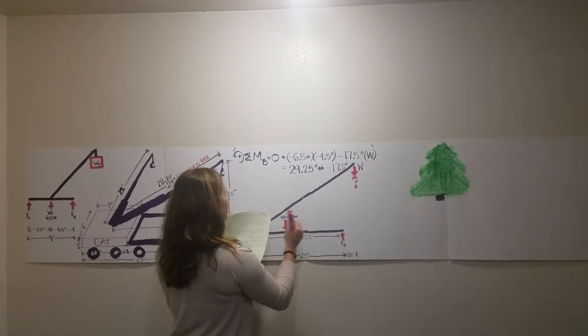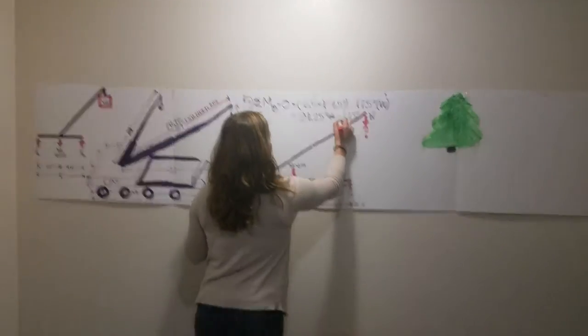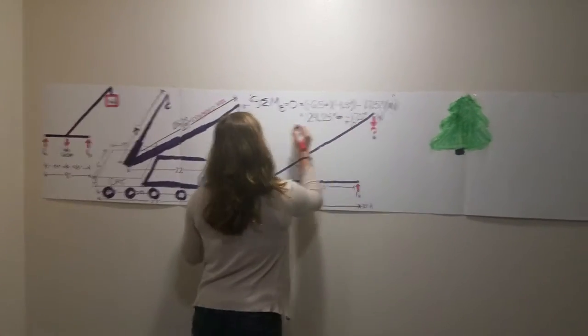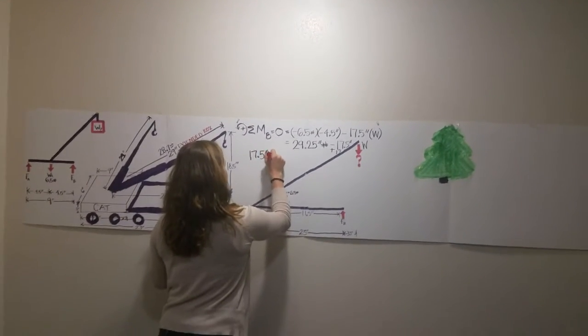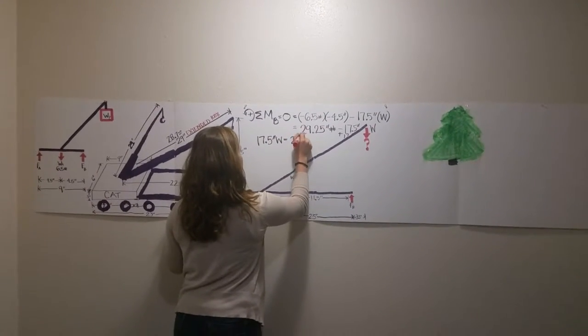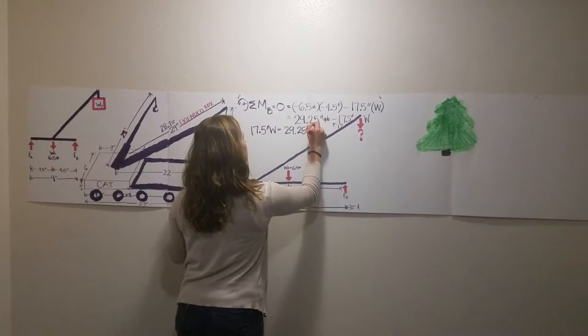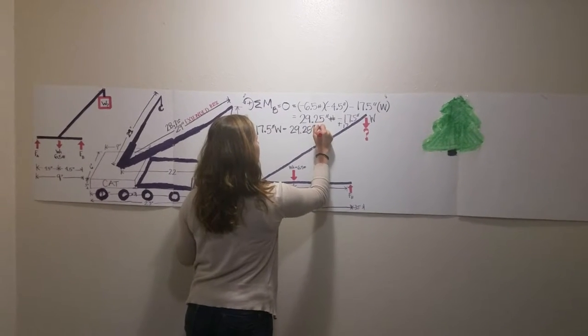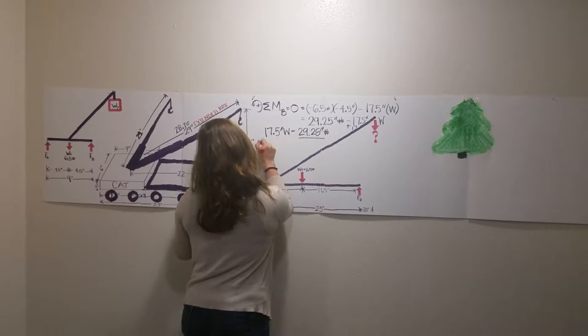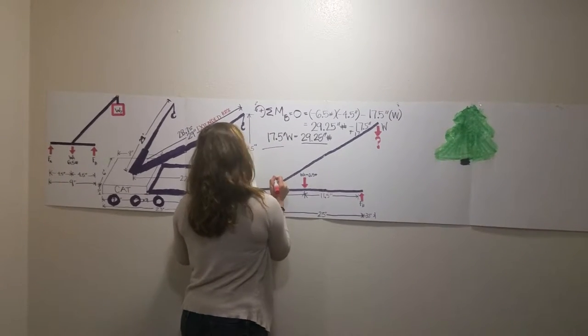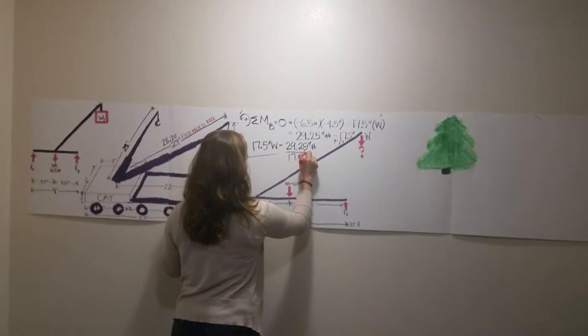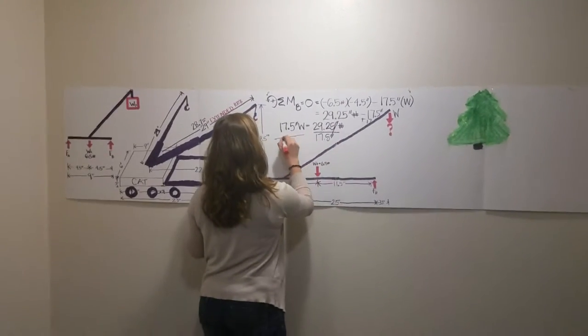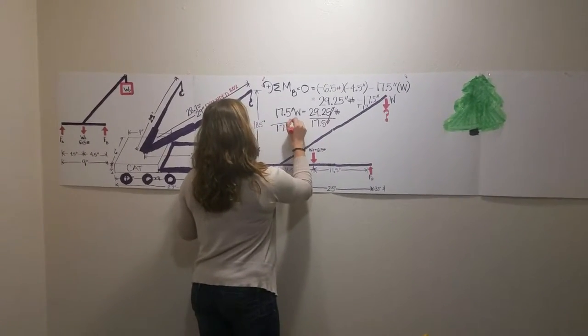And then from there, you can just add this to the other side, so 17.5 inches W equivalent to this, 29.25 inch-pounds. And you divide by the 17.5 inches, the signs cancel out. This cancels out.